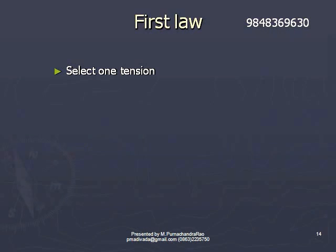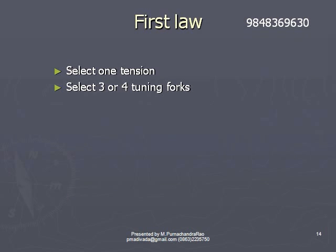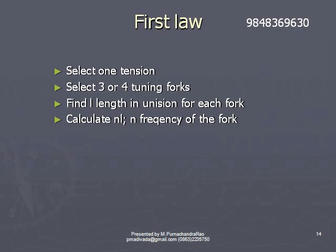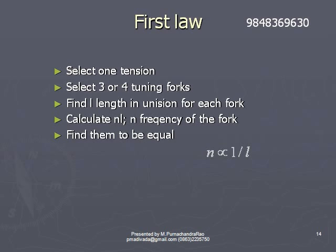For verification of the first law, select three or four tuning forks and select only one tension. By following the experimental procedure, find the length in unison L for each tuning fork. If N is the frequency of a tuning fork and L is the length in unison, calculate NL. You will find that the values of N × L for each tuning fork are the same, which indicates N is inversely proportional to L. With tension and linear density kept constant, this proves the first law.